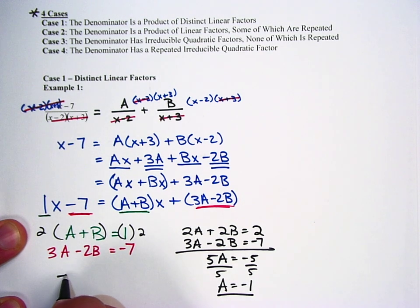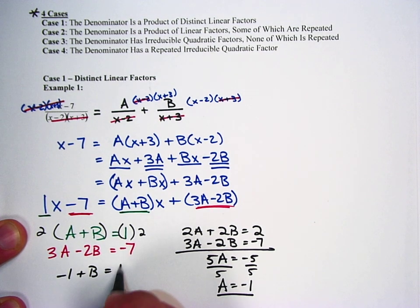If A equals negative 1, I can plug it back in over here. Negative 1 plus B equals 1. B then equals 2.